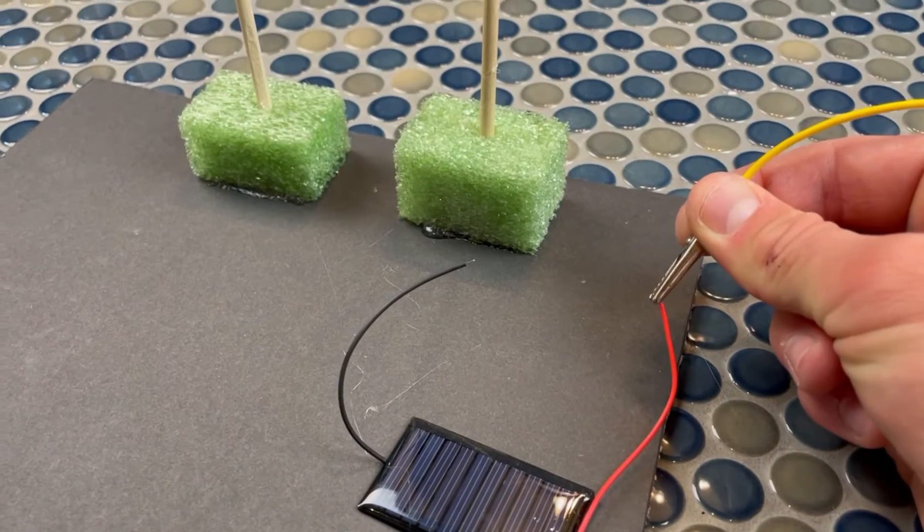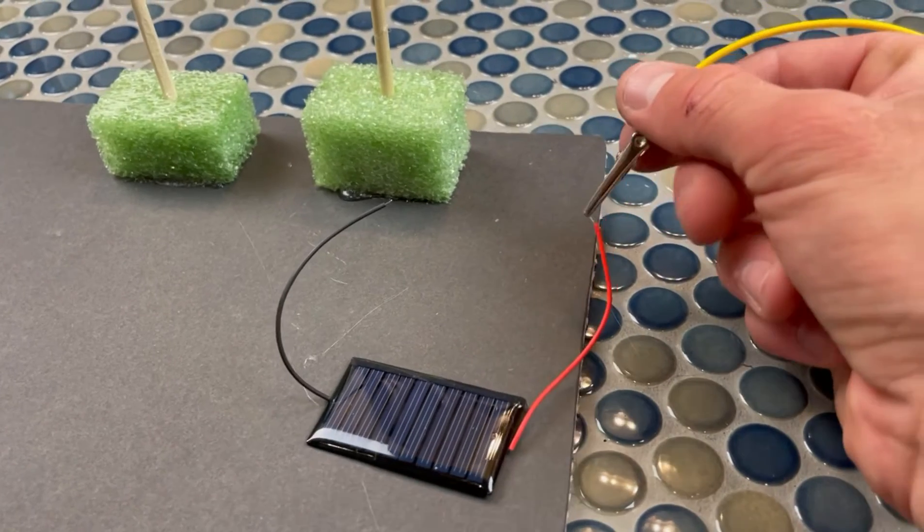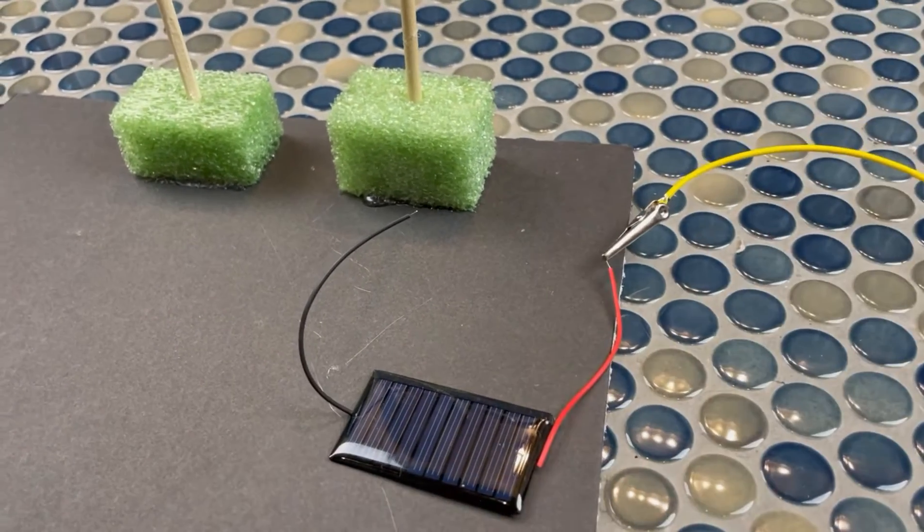And this is where we should be at right now. And now it's time to get out our alligator clipped wires. And friends, each group is entitled to two of them, and the color does not matter.